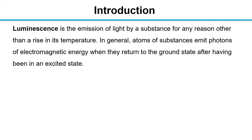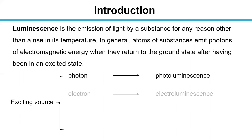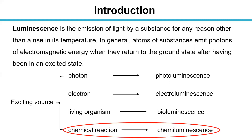What is luminescence? Luminescence is the emission of light by a substance for any reason other than a rise in its temperature. In general, atoms of substances emit photons or electromagnetic energy when they return to the ground state from an excited state. There are mainly four excitation sources: photons, electrons, living organisms, and chemical reactions — also called photoluminescence, electroluminescence, bioluminescence, and chemiluminescence respectively.